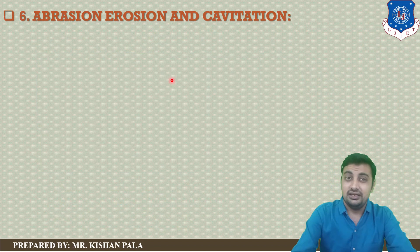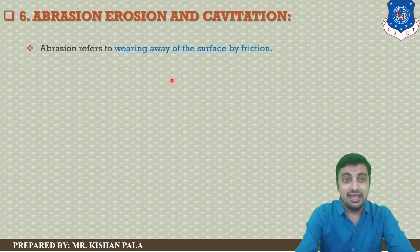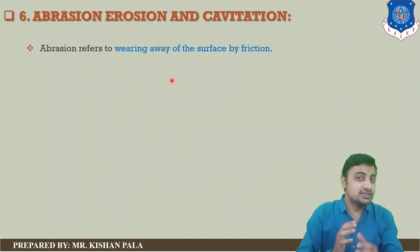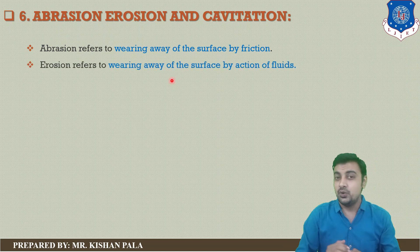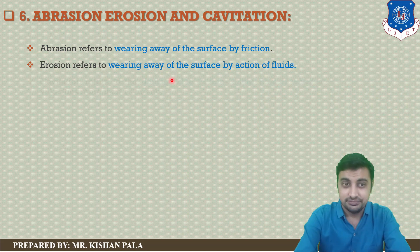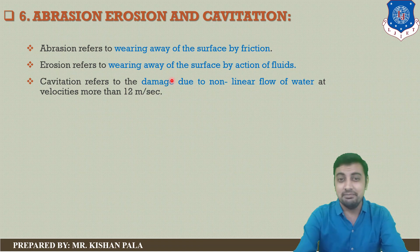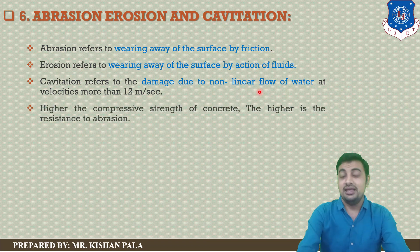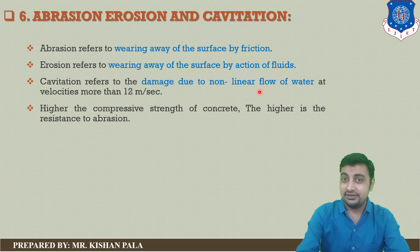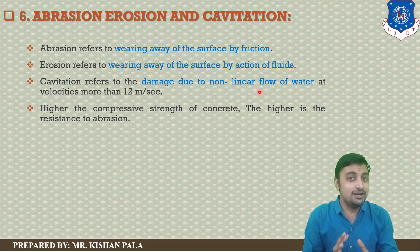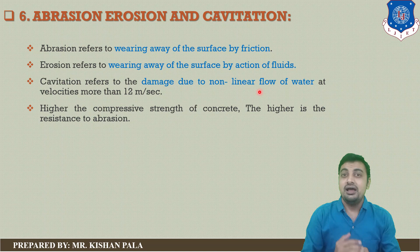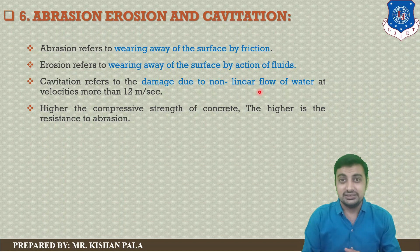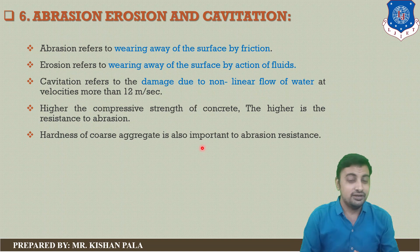Next is abrasion, erosion, and cavitation. Abrasion refers to the wearing away of a surface by friction. Erosion refers to wearing away the surface by the action of fluids. Cavitation refers to damage due to non-linear flow of water at velocities more than 20 metres per second. We can reduce the wearing effect by using high grade concrete and by increasing the hardness of the concrete. Before using aggregates, we should test their properties using an abrasion test, as the hardness of coarse aggregates is important for abrasion resistance.